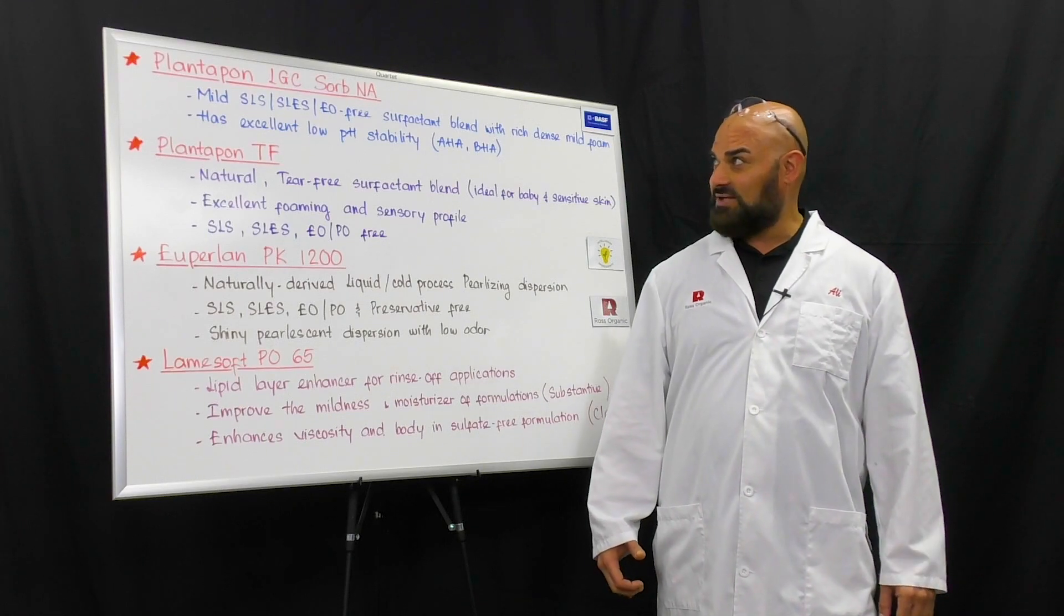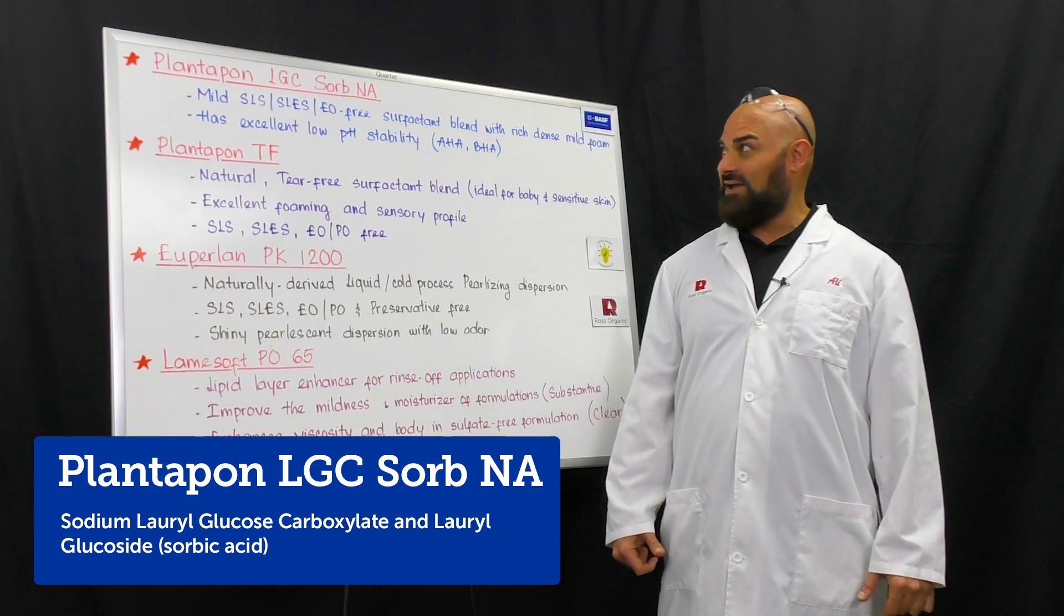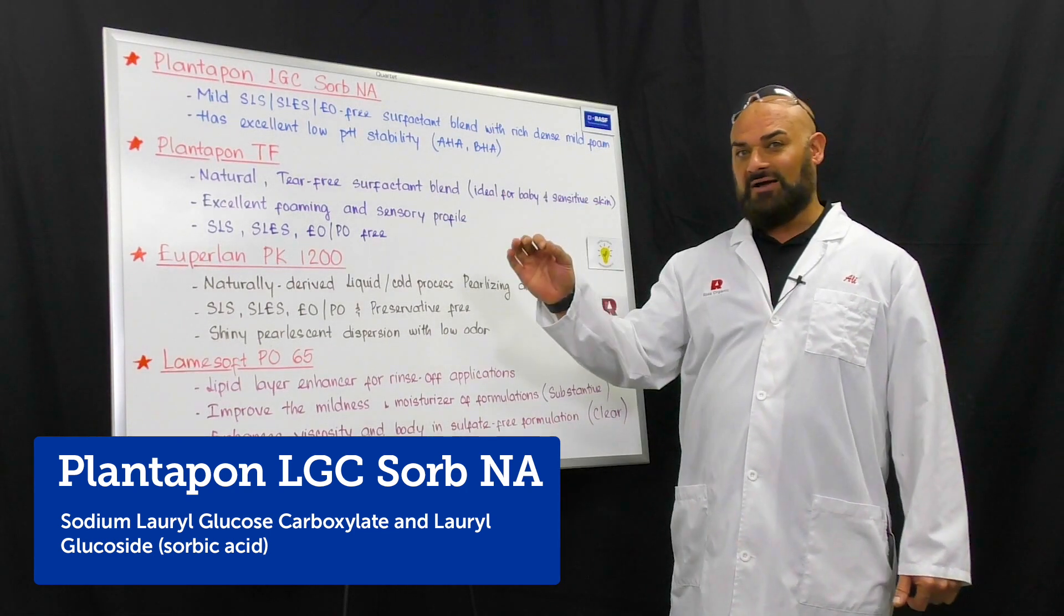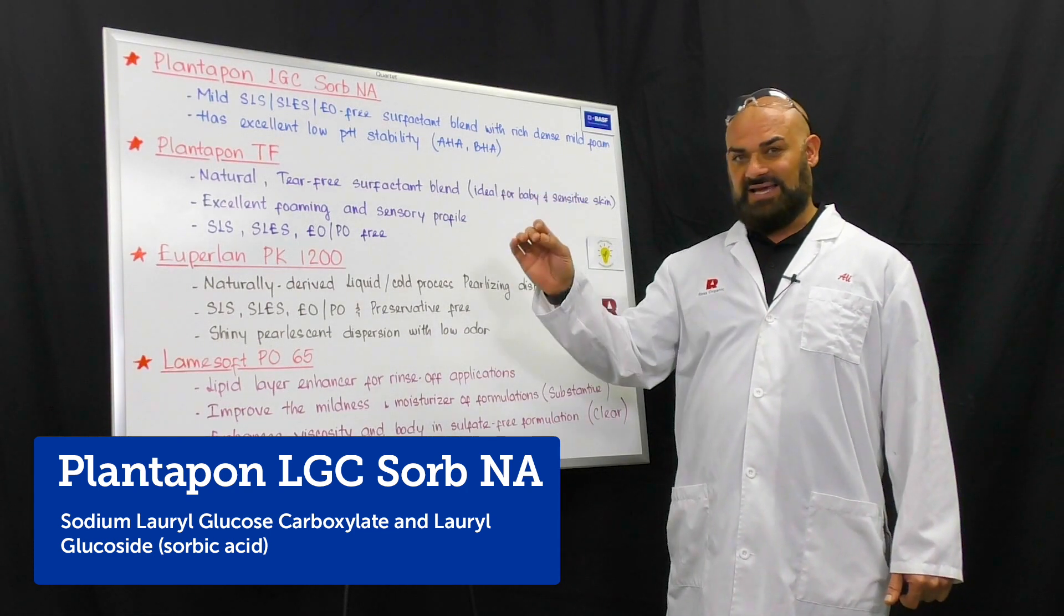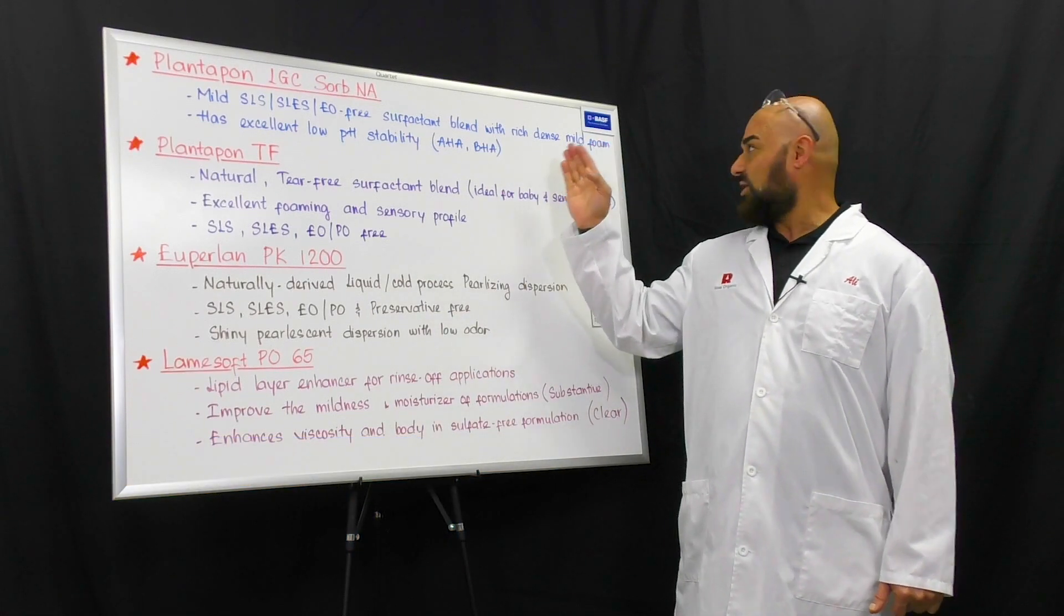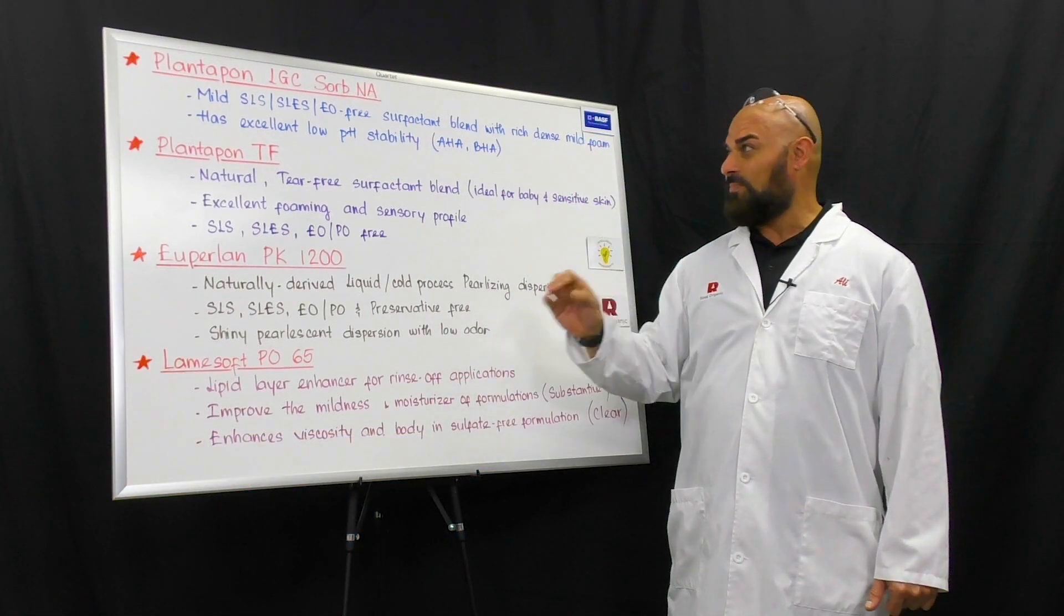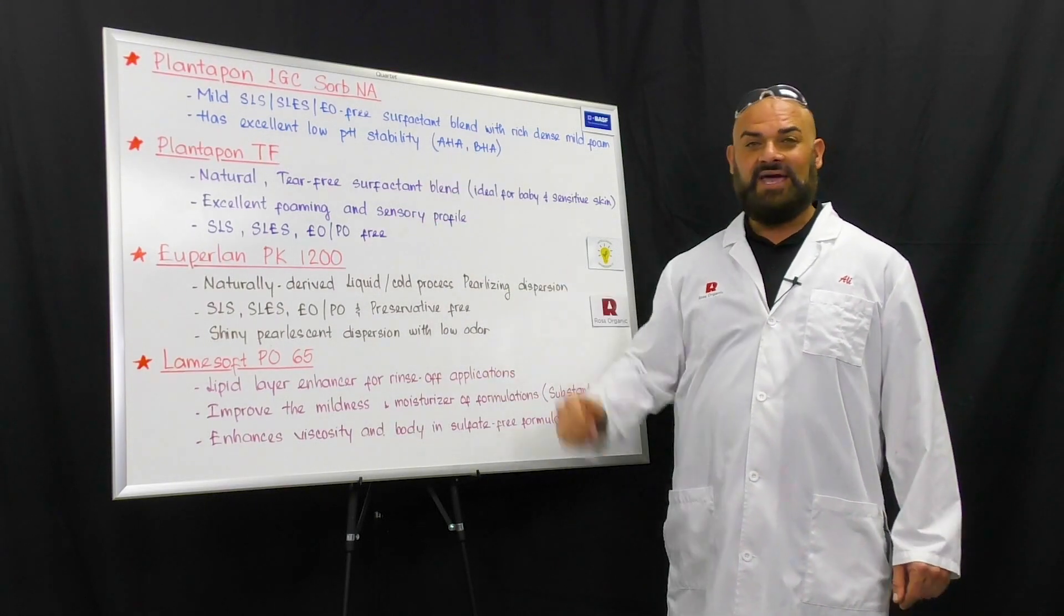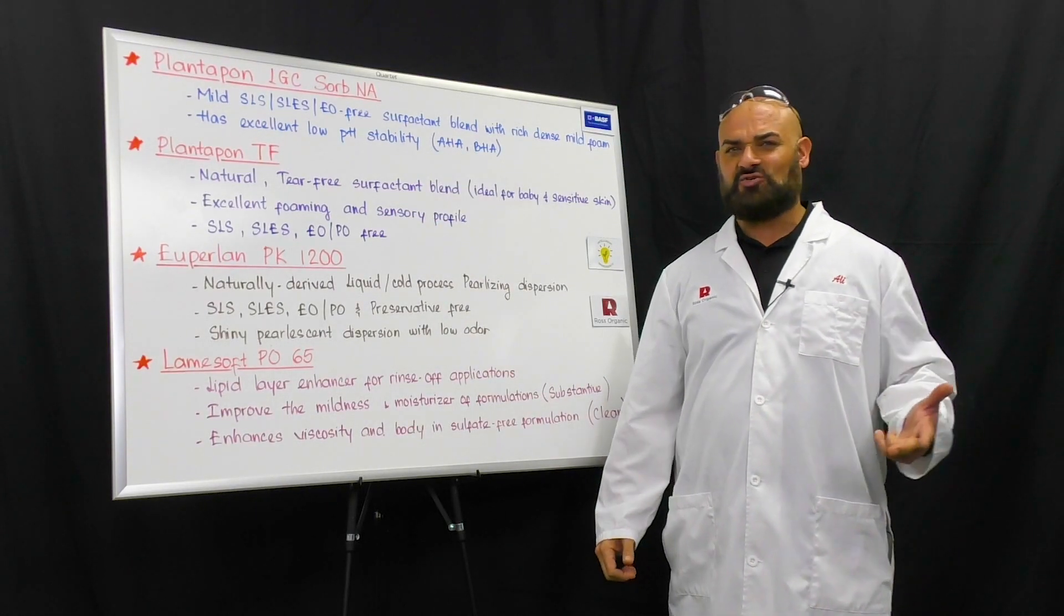The four that I picked today is the PlantUpon LGC Sorb NA from BSF. This is a mild SLS, SLES, ethoxylate-free surfactant blend with rich, dense, mild foam. This has excellent low pH stability, so it's great for alpha hydroxy,